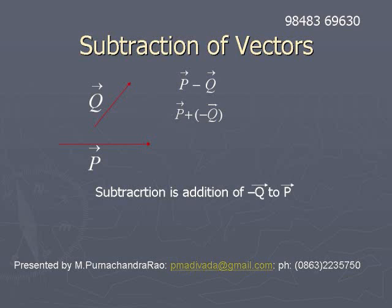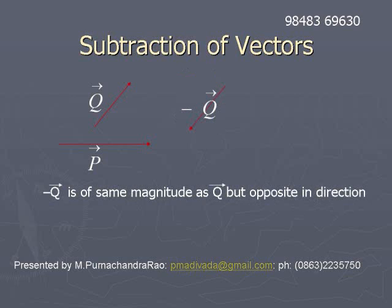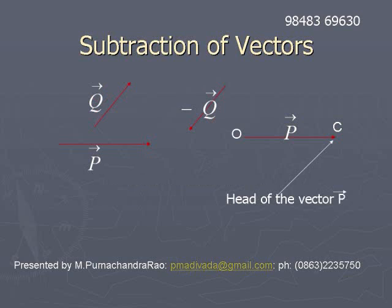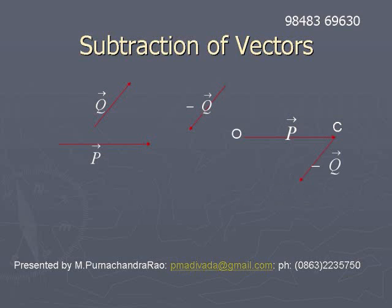First, draw the minus q̄ vector. Here p̄ and q̄ are shown, and minus q̄ is shown at the middle. Now construct p̄ vector, written as OC — C is the head of p̄. At C, construct the minus q̄ vector.